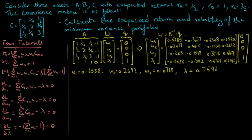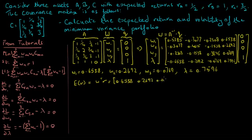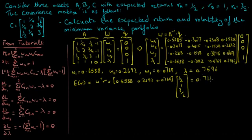We have used our optimization program to solve for the weights that give us the minimum variance portfolio. Now we have to calculate the expected return and volatility using these weights. The expected return is equal to the column vector of weights transposed times the column vector of returns. This equals the vector of weights for the first, second, and third assets times the column vector of returns — RA equals 1/2, RB equals 1, and RC equals 3/2. Multiplying the row vector of weights by the column vector of returns, we get an expected return of 0.7115.